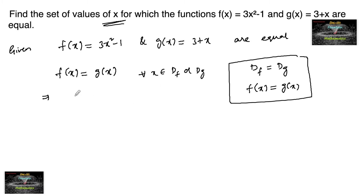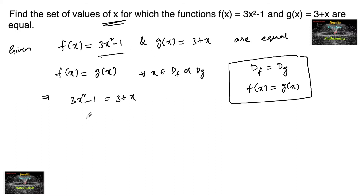Since it is given that f(x) = g(x), we can write 3x² - 1 = 3 + x. Rearranging, this becomes 3x² - x - 1 - 3 = 0, or 3x² - x - 4 = 0.